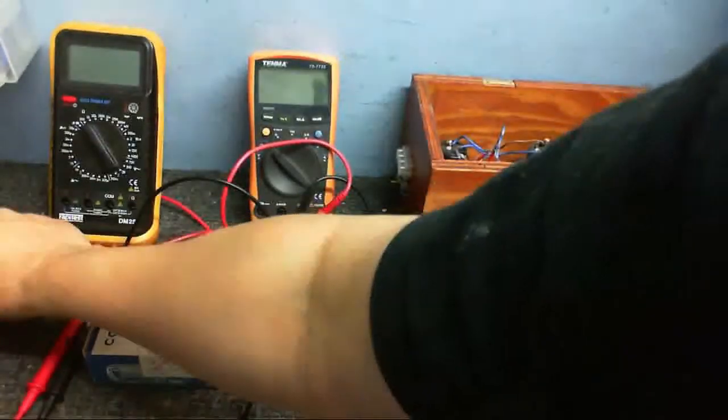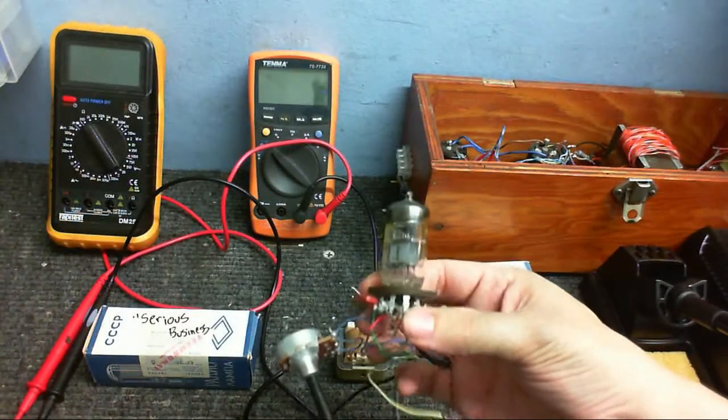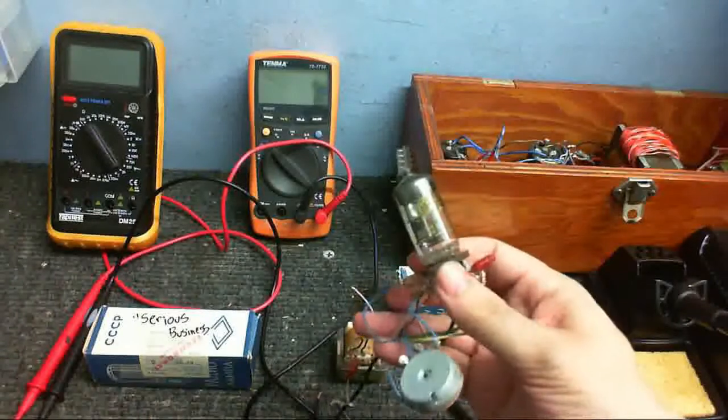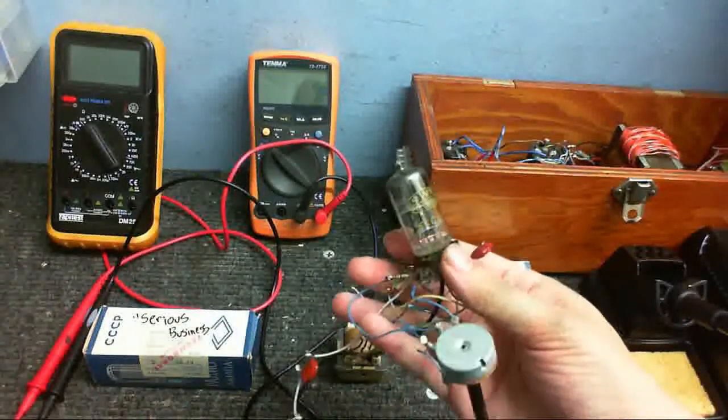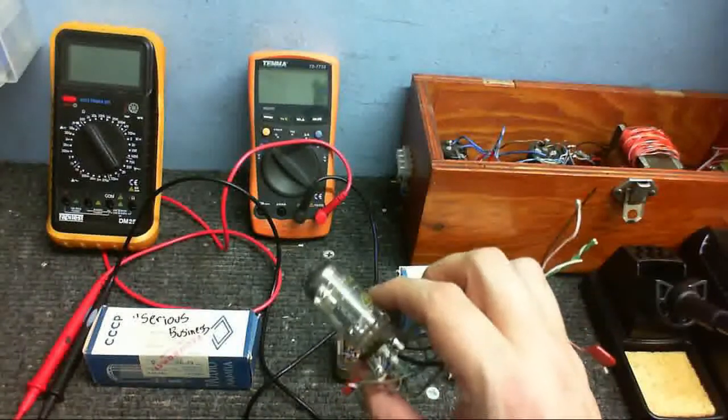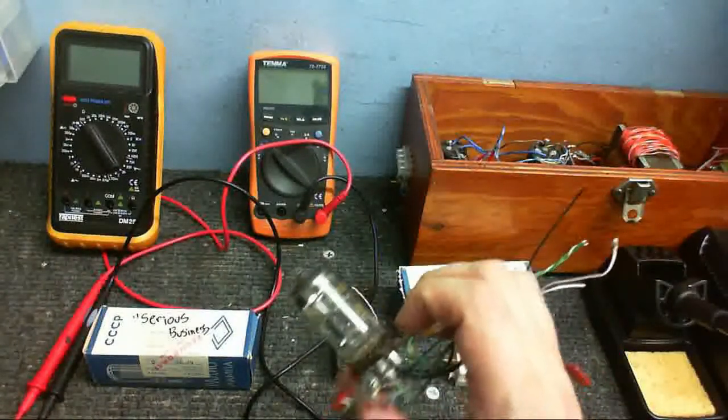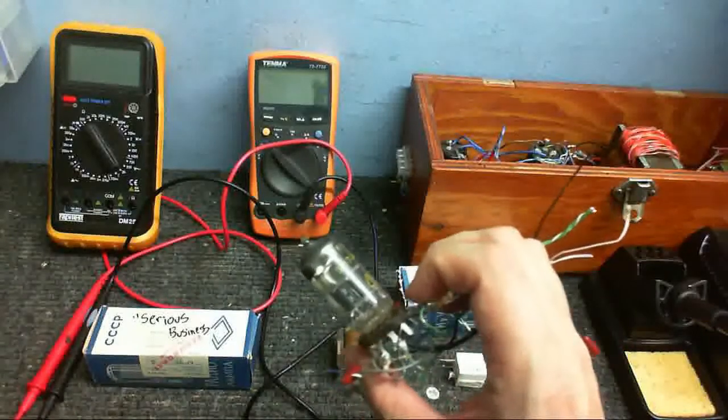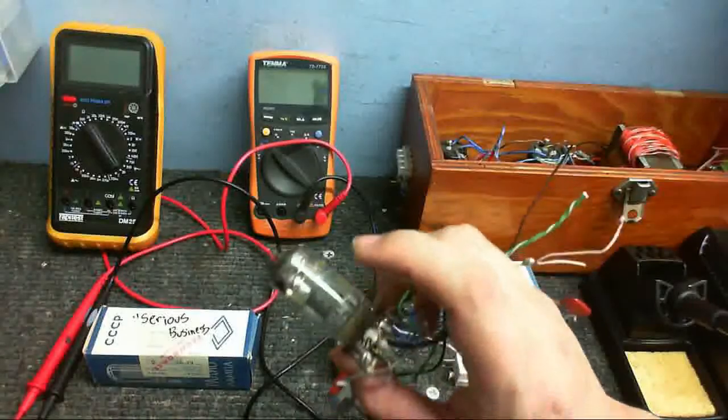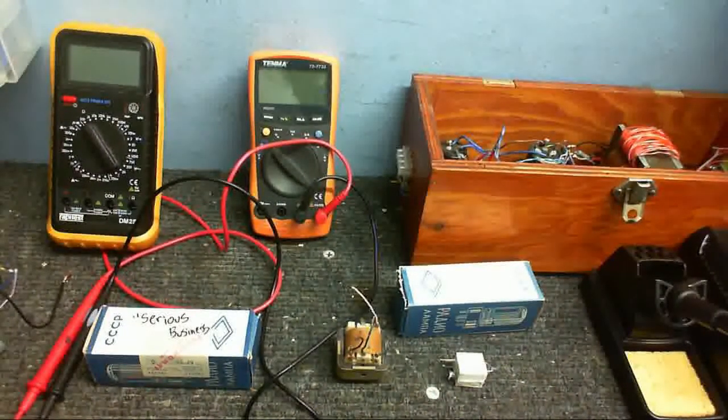It's going to be made out of three tubes. This is a dual triad ECC-83. That's an ECC-83 circuit that I made. This is going to be the phase splitter and the first amplification stage, because I'm using one of the triads as the amplification, and the other triad as the signal splitter and phase inverter.